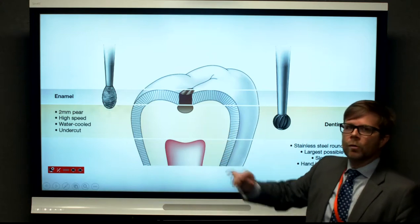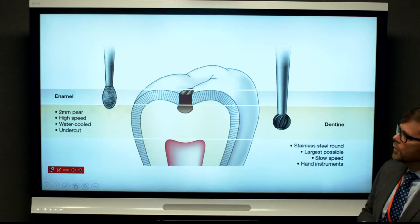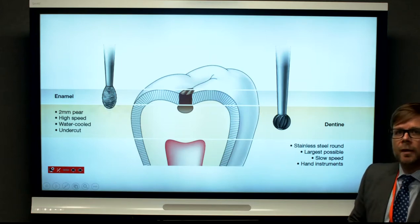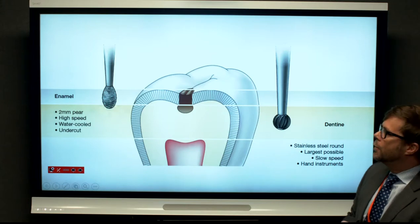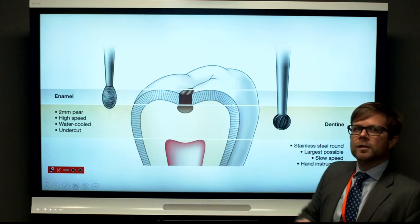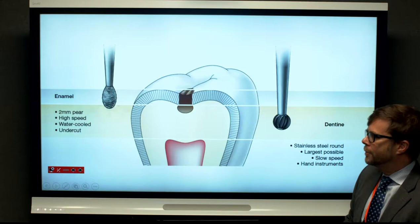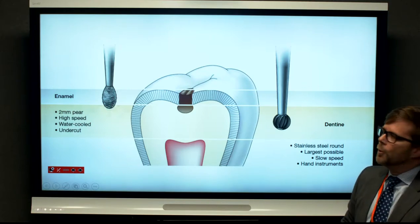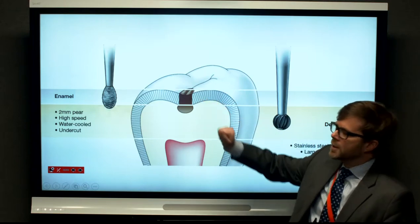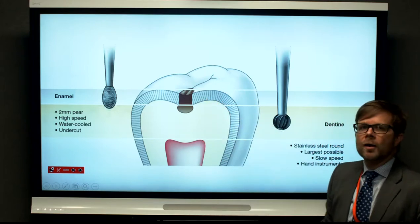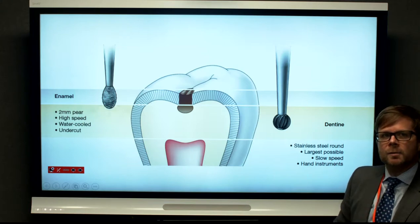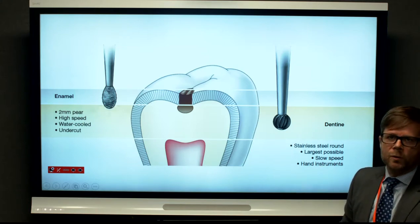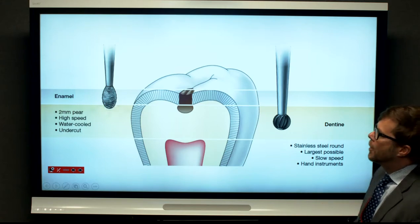Just to recall, we have the high speed handpiece with high speed burrs. They can be diamond grit covered or tungsten carbide burrs, and their job chiefly is to remove enamel or to cut through enamel. Enamel is the hardest substance in the body, so it needs the high speed handpiece run at high speed, water cooled to prevent friction, and the diamond grit or tungsten carbide to cut efficiently through enamel.